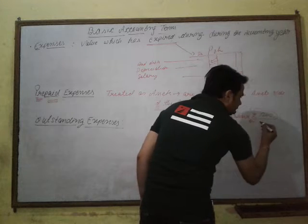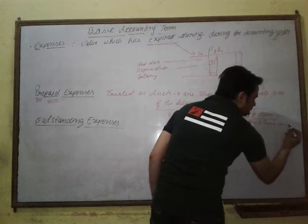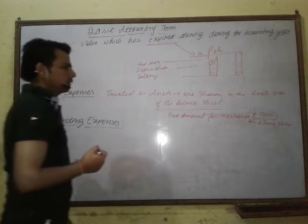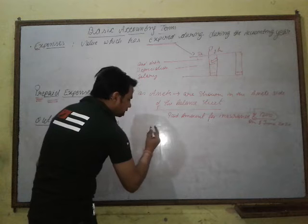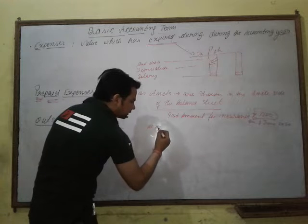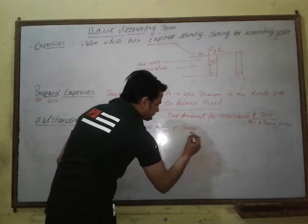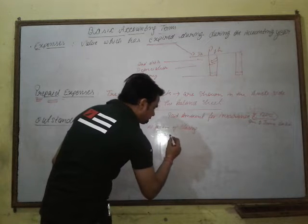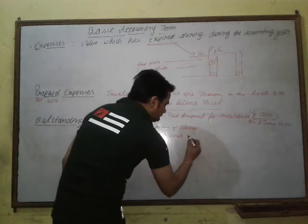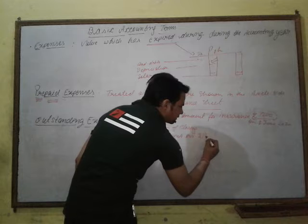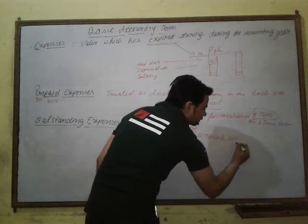You paid the insurance amount of ₹1200 on 1st June 2020. When the accounts will close — at the time of closing the accounts on 31st March 2021 — we need to calculate how many months of insurance expense belong to this accounting year.